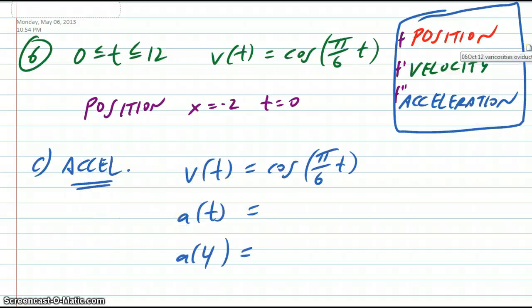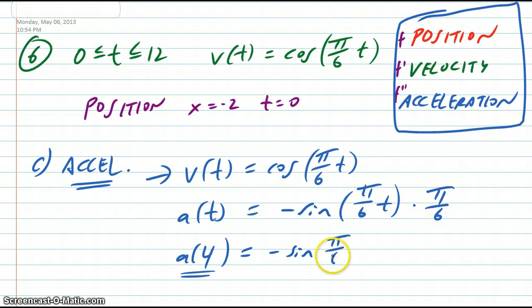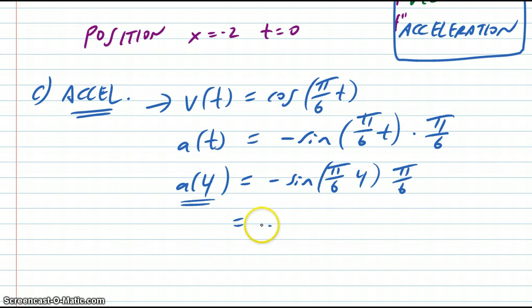For C, C wants the acceleration. So you need to take the derivative. You have velocity, take the derivative. You should know the derivative of cosine. Remember, we've been going back and forth. So this is a little tricky here. But the derivative of cosine is negative sine, π over 6 t. And then make sure you multiply by π over 6. It's probably going to be a mistake that some people make. And then from there, what we're looking at is to plug in 4, because it wanted the acceleration at time 4. So negative sine, we got π over 6 times 4, and then that's π over 6 on the end.